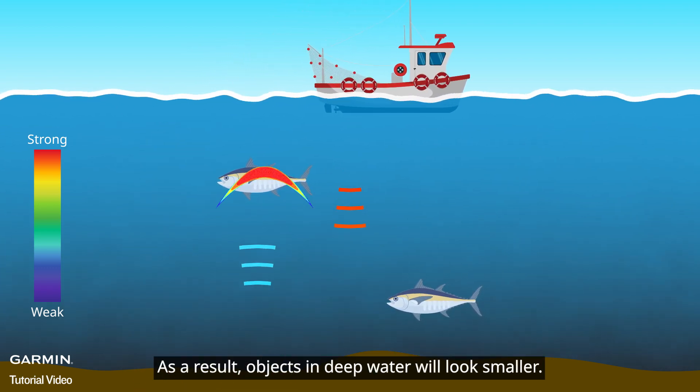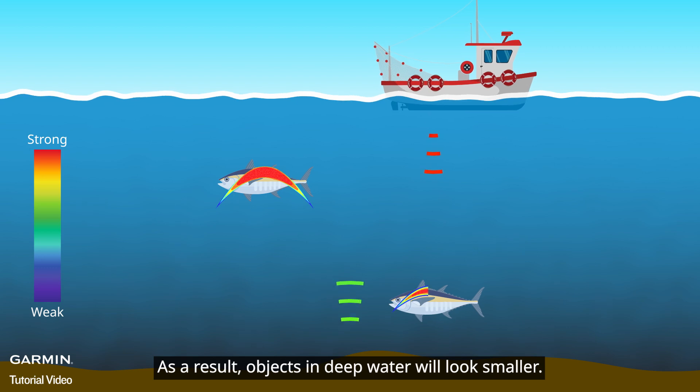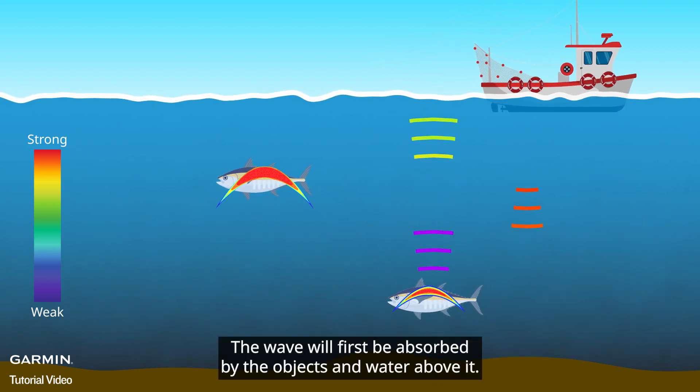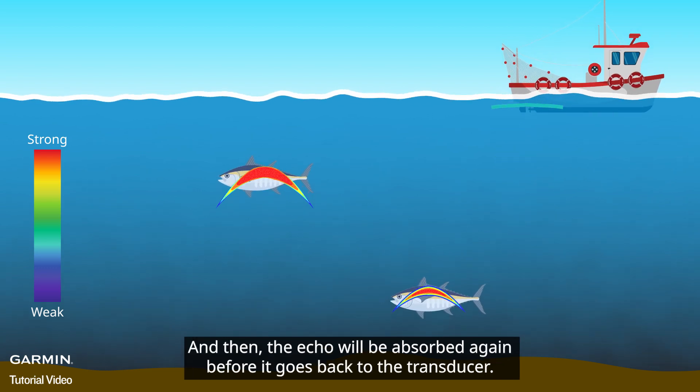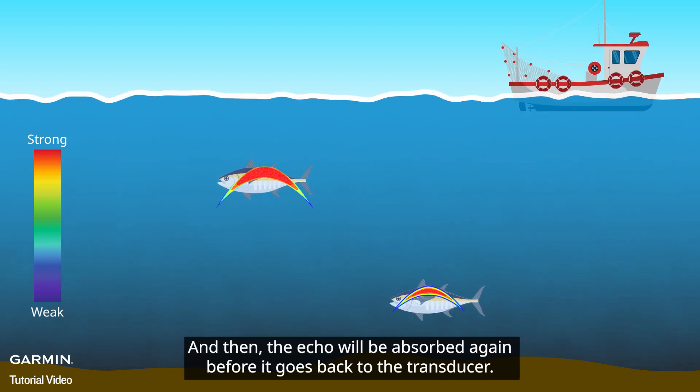As a result, objects in deep water will look smaller. The wave will first be absorbed by the objects and water above it. And then, the echo will be absorbed again before it goes back to the transducer.